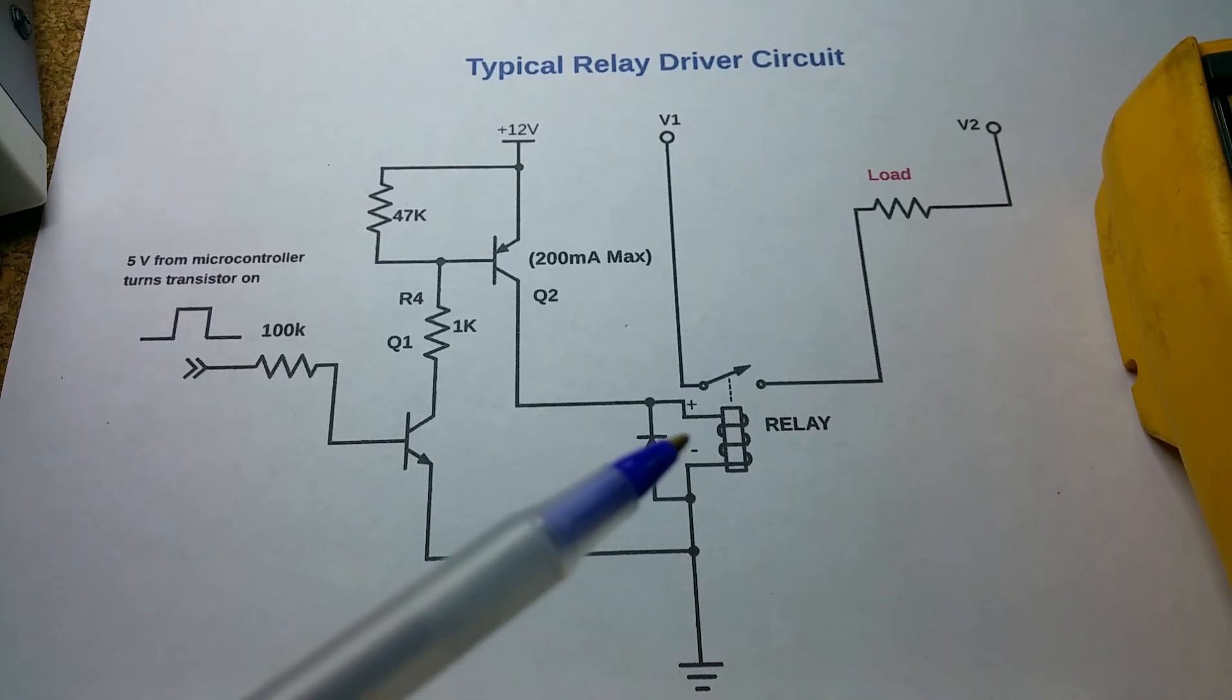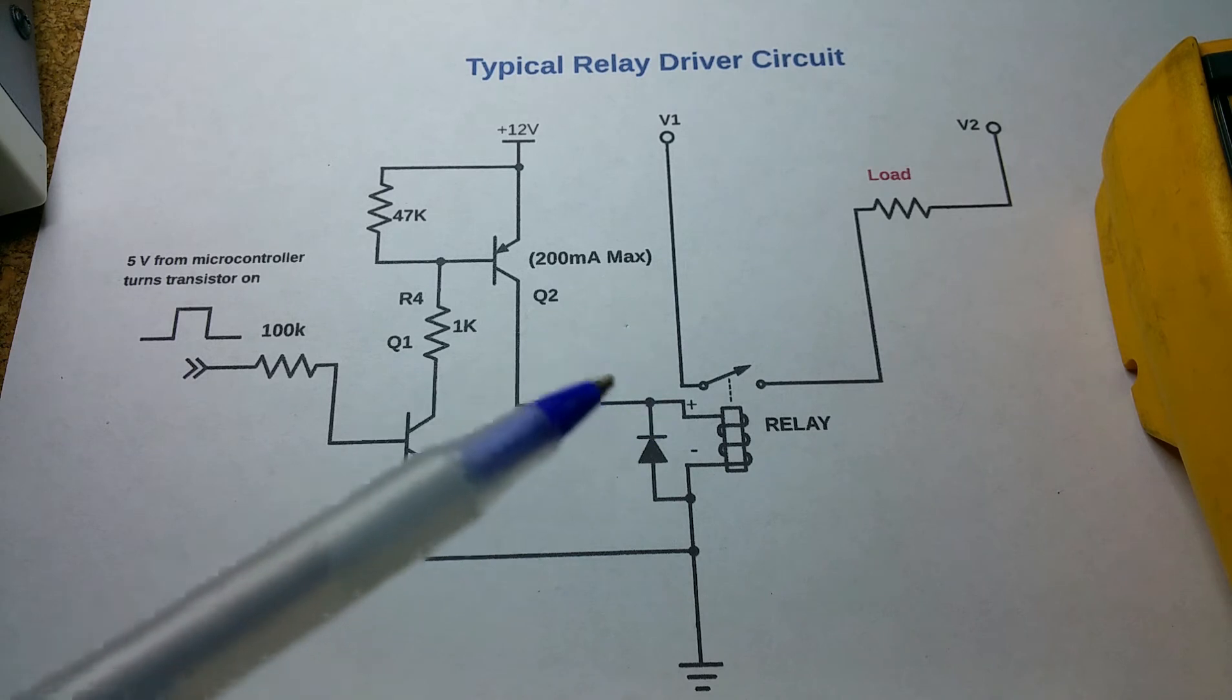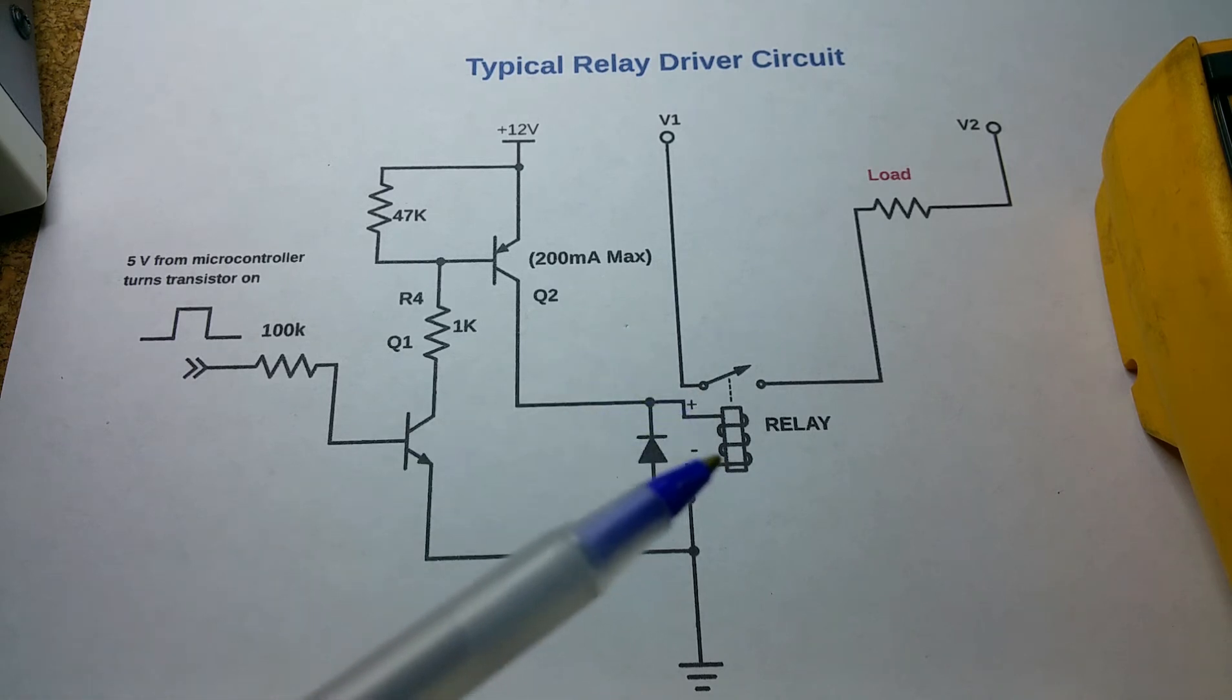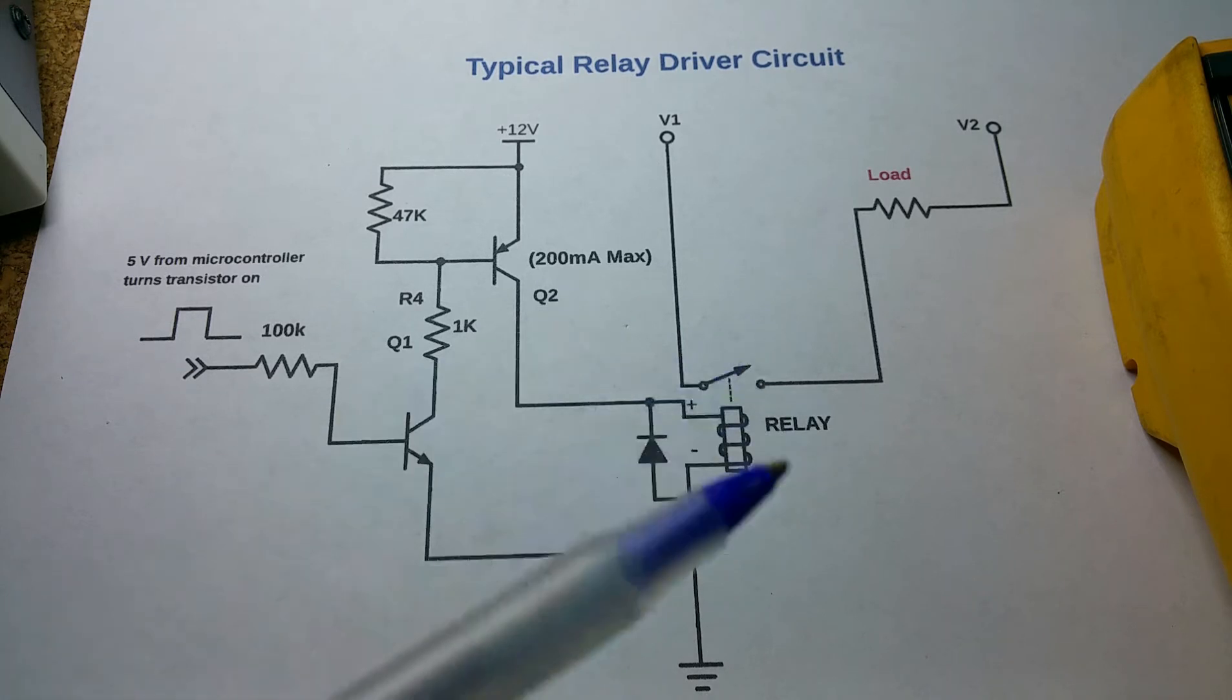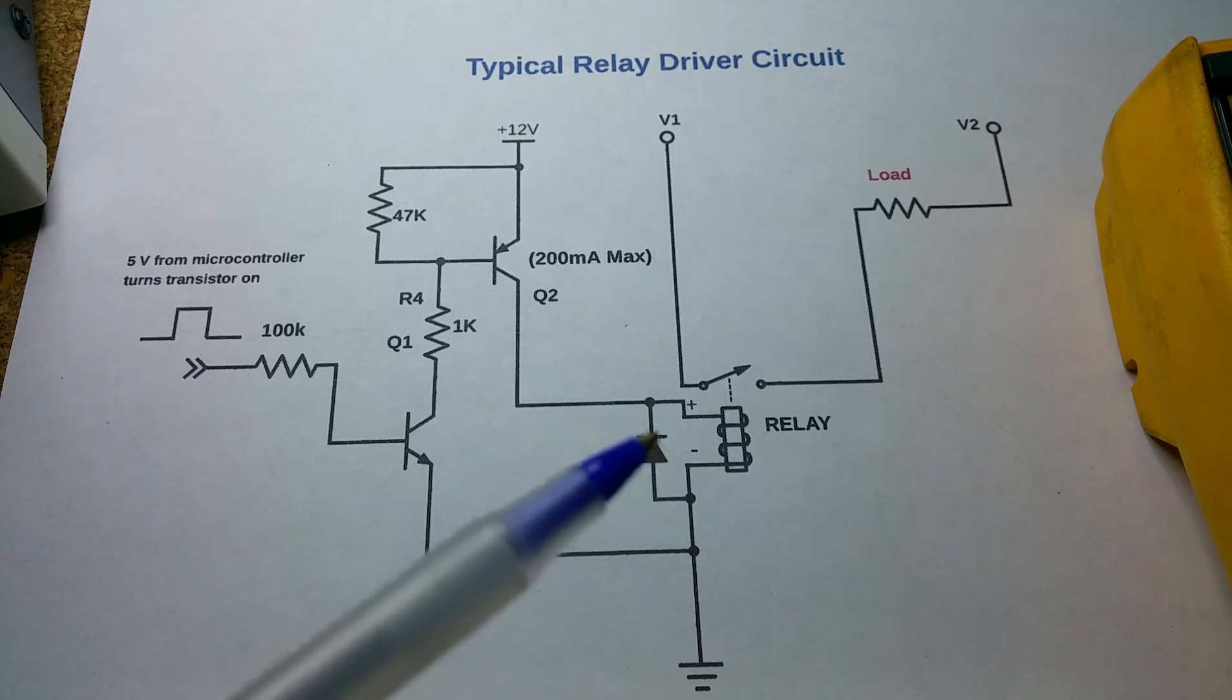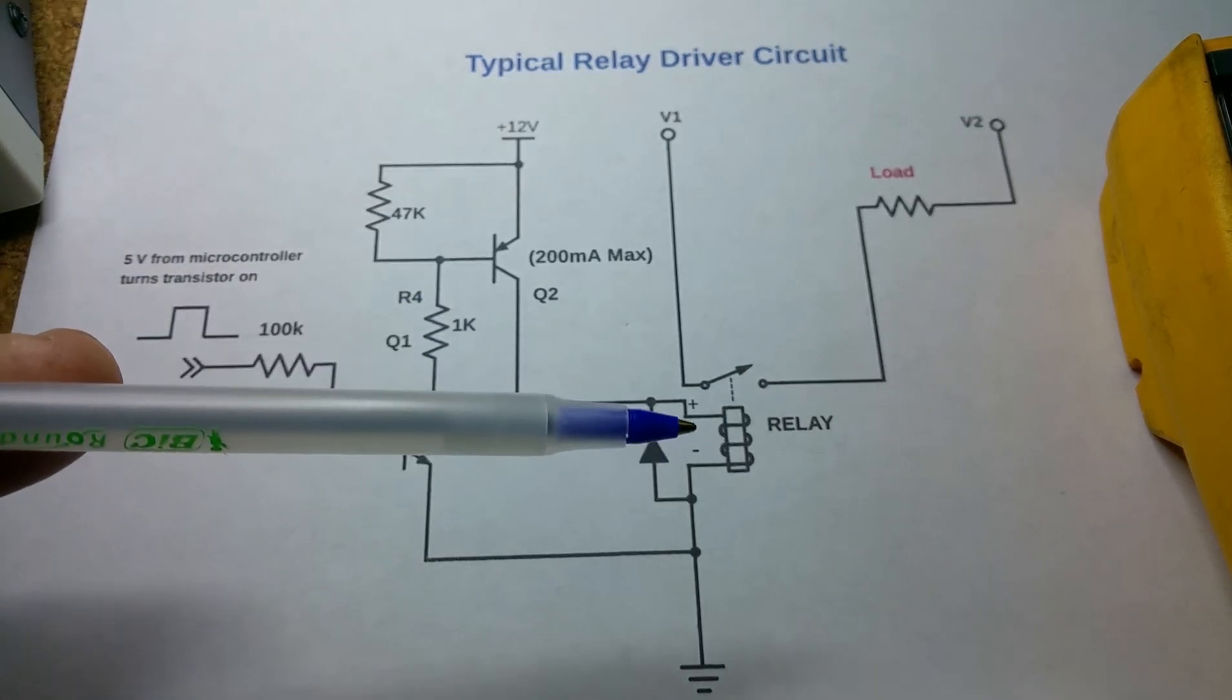Because if you replace it with a relay that's not specified for it, you're actually making a modification to the circuit. Although it may not be a bad thing, you technically are making a modification, and the reason is you're not going to find a relay that has the exact coil resistance as the original, likely.